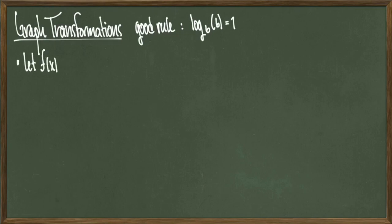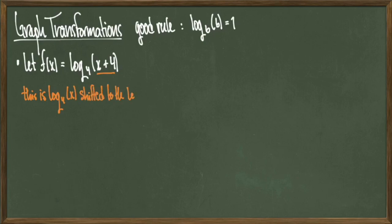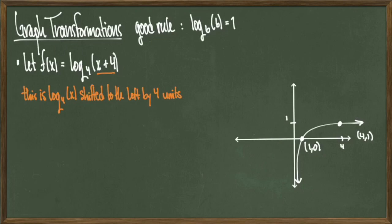So consider the function f(x) = log base 4 of (x + 4). The x + 4 should be indicative of a shift to the left by 4 units in this transformation. So the first thing I'll do is I'll draw our parent graph log base 4 of x, which looks like this.